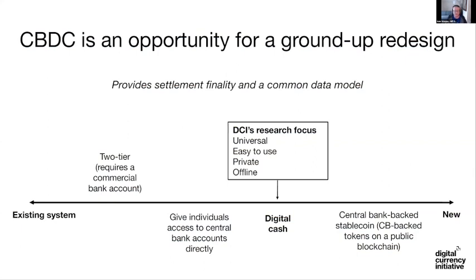What we're focused on — this notion of digital cash — lies more on the retail side, where it is a direct liability of the central bank still, but how you access the system is direct rather than requiring any particular intermediary. That's not to say that there won't be intermediaries, and we can talk about that more later, but I just want to clarify what the relationship is on how the model will function. That's the notion of the spectrum for how CBDC might operate.